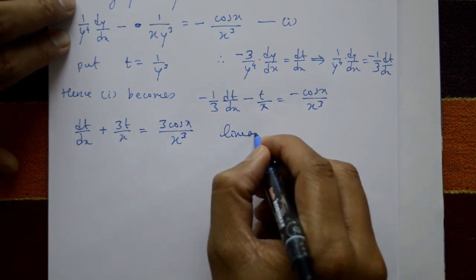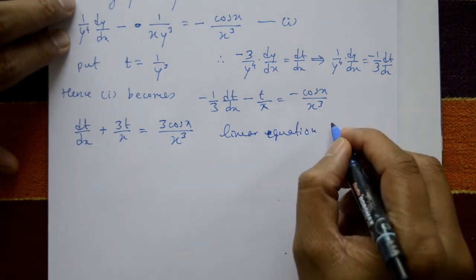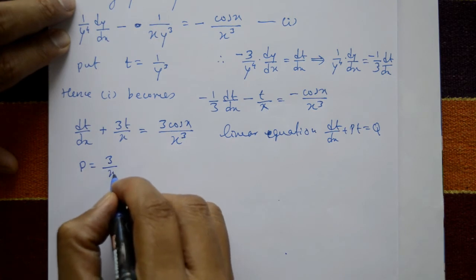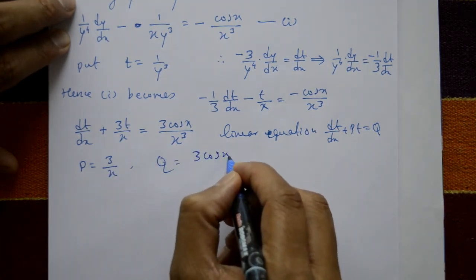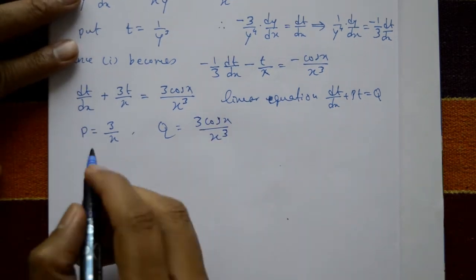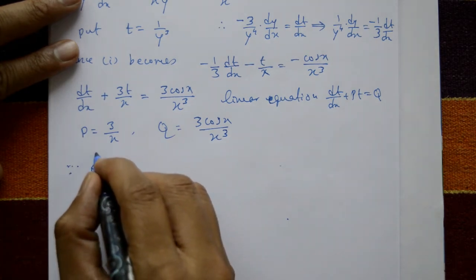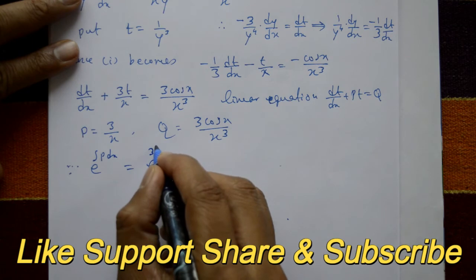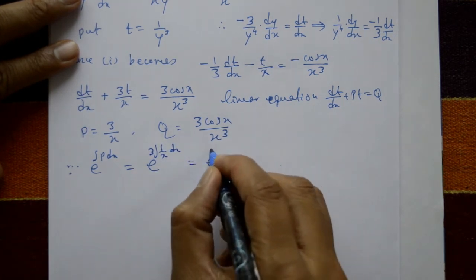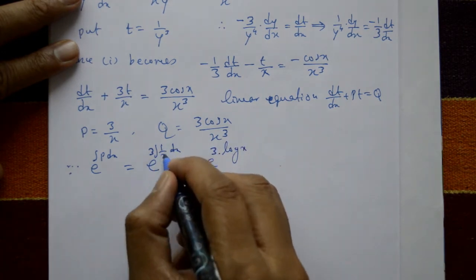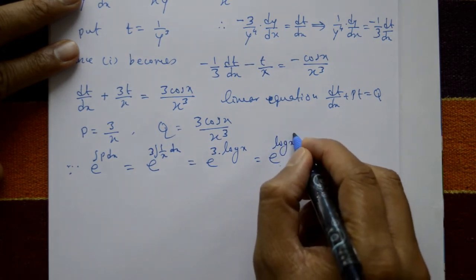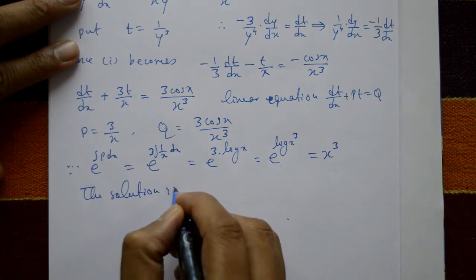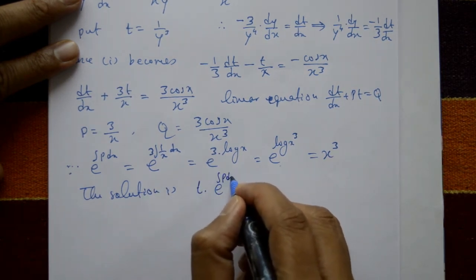The linear equation form is dt/dx plus Pt equals Q, where P equals 3/x and Q equals 3cos x / x³. The integrating factor is e to the power of the integral of P dx, which equals e to the power of 3 times integral of 1/x dx, giving e to the power log(x³), which equals x³.